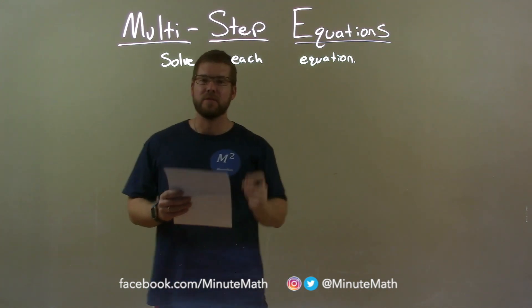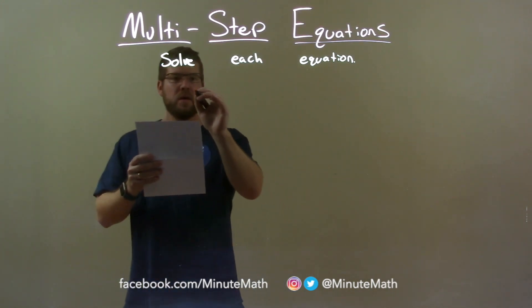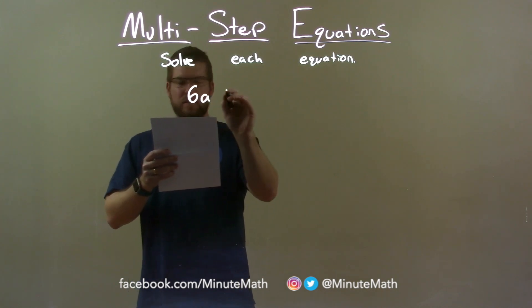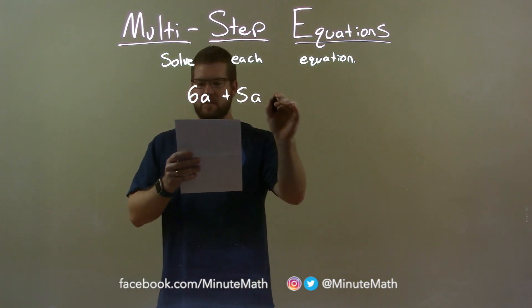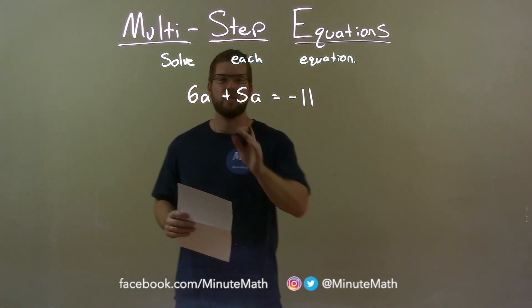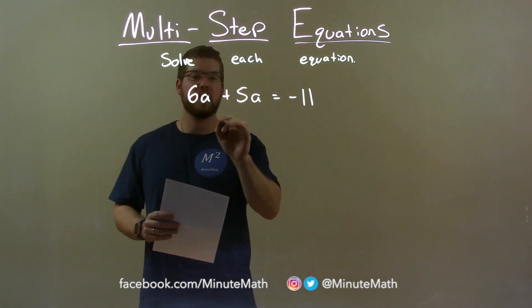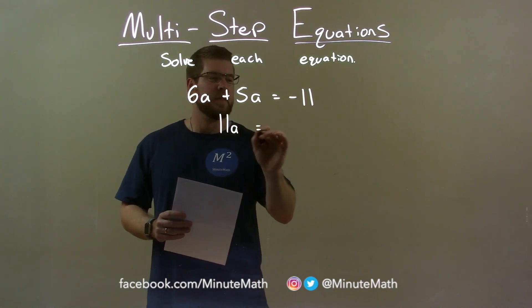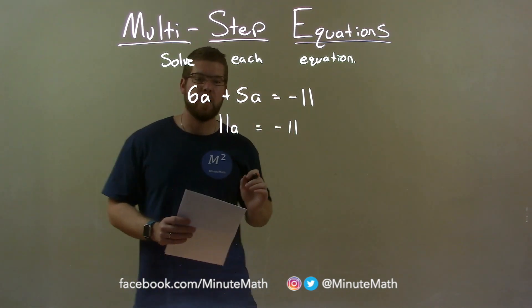If I was given this equation 6a plus 5a equals negative 11, the first thing I want to do is combine my like terms. 6a and 5a come together to be 11a, and that equals the negative 11 on the right.